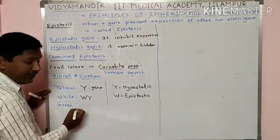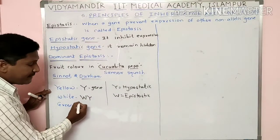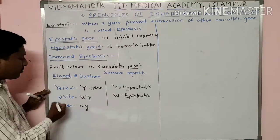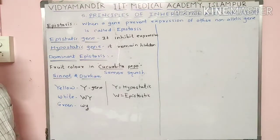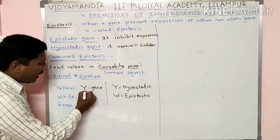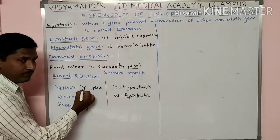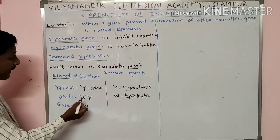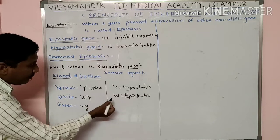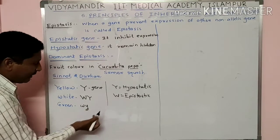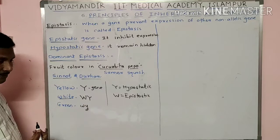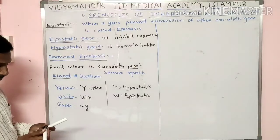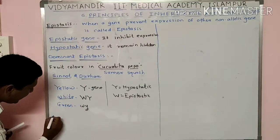This is an example of epistasis, and capital W is a dominant gene, so it is dominant epistasis. In the absence of both dominant alleles — when both genes are recessive (small w and small y) — the fruits become green. So if capital Y is present alone, yellow fruits form; with capital W present, fruits are white; and with both recessive, fruits are green.